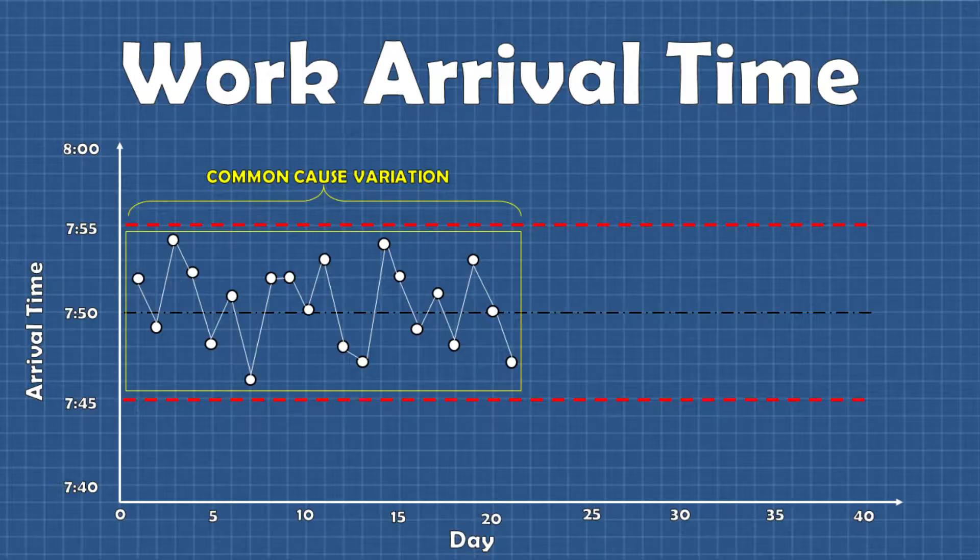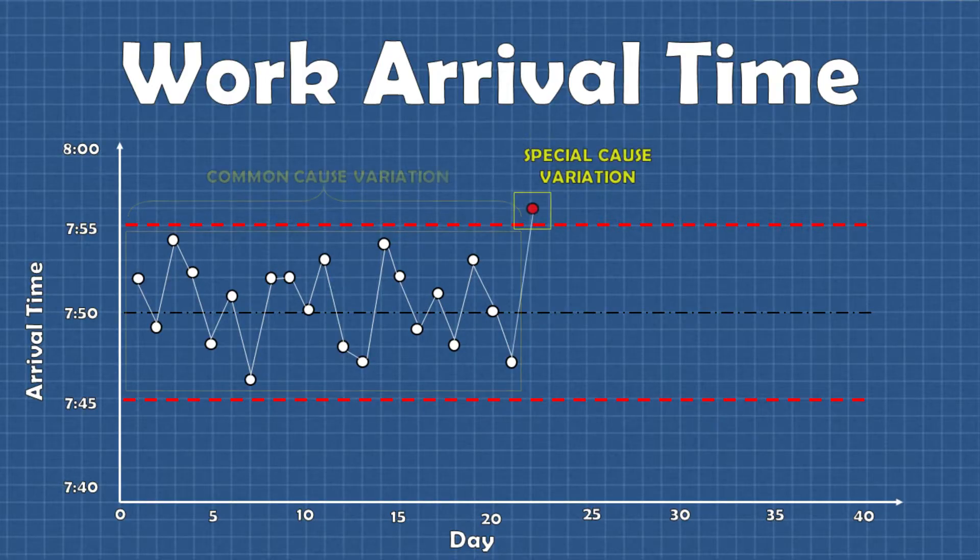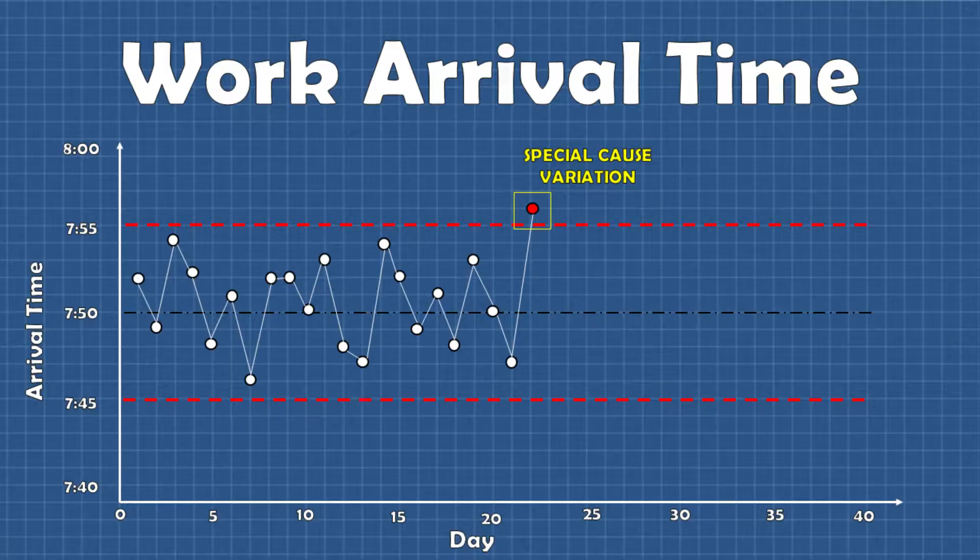But what if your car breaks down? You definitely aren't going to make it to work within the usual time range. This type of scenario represents special cause variation where there is some atypical cause that leads you to arrive at work way later than usual. Luckily your boss uses control charts so as soon as 7:56 hits he knows something is up and he calls. After you tell him what's happened he sends a cab and a tow truck and you make it to work even though you arrive much later than usual.